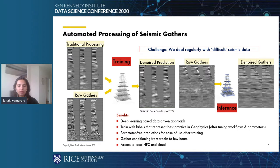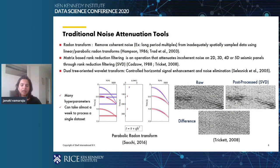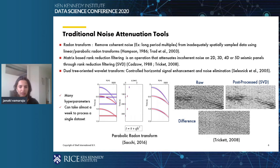A post-migration data volume can now be processed using deep learning within hours of migration. We train a deep learning model on raw gathers and labels created from best practice workflows in geophysics. After training, this model is used in inference for direct prediction of denoised gathers. Many advanced signal processing techniques have been developed for attenuating noise in seismic data. Traditional noise suppressing methods use different characteristics in frequency, wave number, or other transform domains to separate signal from noise. Commonly used techniques include radon transform, matrix-based rank reduction filtering, or the dual tree wavelet transform, and a combination of all these operators is applied to create labels for our data.